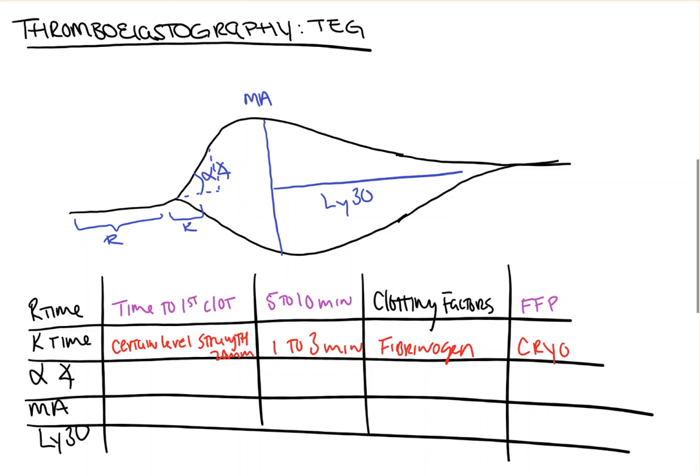Third, we have our alpha angle. And this is the slope of the line between R and K. And it measures the speed of fibrin mesh formation. A normal angle is between roughly 50 to 70 degrees. And this part is also dependent on fibrinogen. And when you have an angle that's shallower than 50 degrees, patient should also then be treated with cryo.